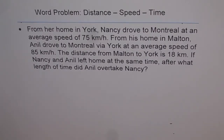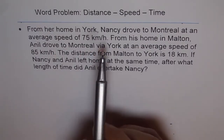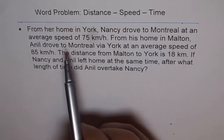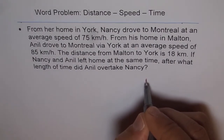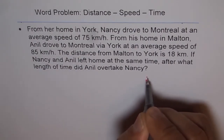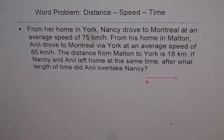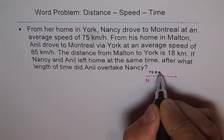Let's first try to understand this question. Let me draw a line diagram to make you understand. First, it says that Nancy drove to Montreal at an average speed of 75 kmph. So let's say this is Nancy and she drives from here towards Montreal, and this speed is given to us as 75 kmph.